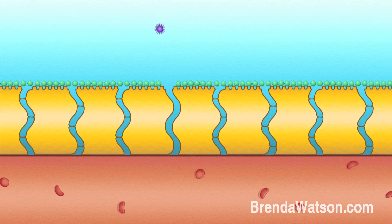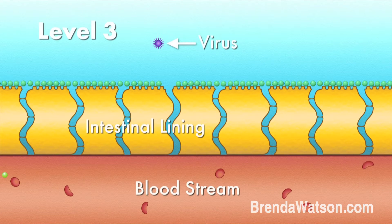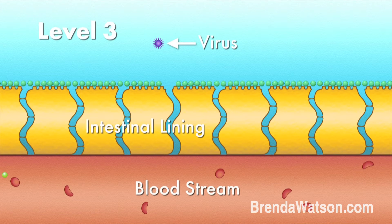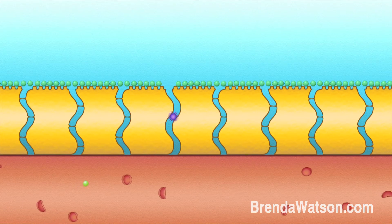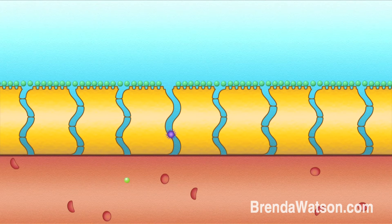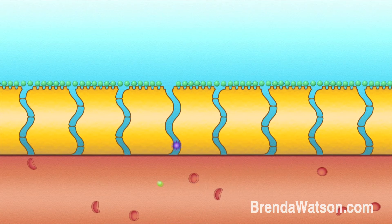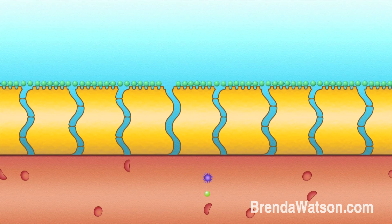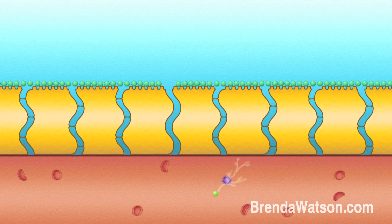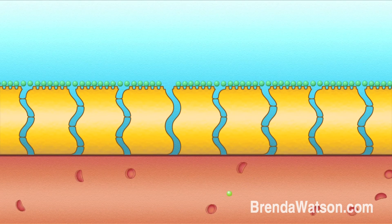And on level three, if the virus passes through level one and two, the friendly bacteria actually communicate to one another. And they communicate to your body to produce substances that would neutralize the virus before it would cause you damage.